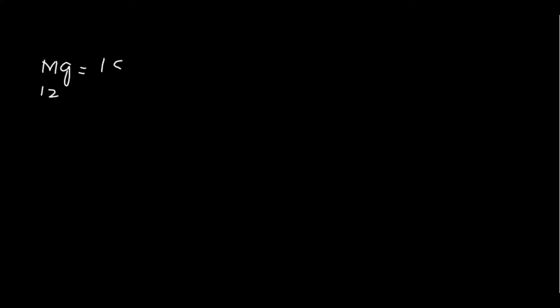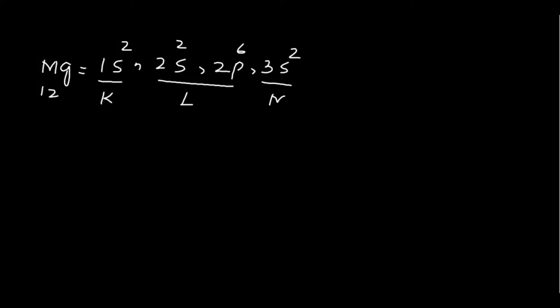Magnesium has atomic number 12. Its electronic configuration is 1s² 2s² 2p⁶ 3s². The 1s subshell belongs to the K shell, 2s and 2p belong to the L shell, and 3s belongs to the M shell — meaning M is the valence shell for magnesium. It has two electrons in the valence shell. Since an element with fewer than three valence electrons usually loses electrons in a chemical reaction, magnesium will lose two electrons.